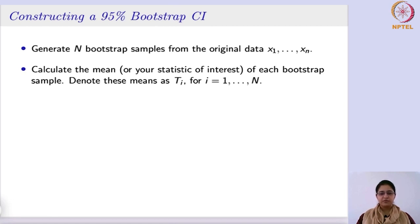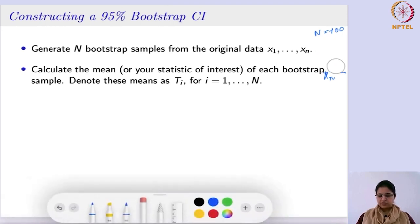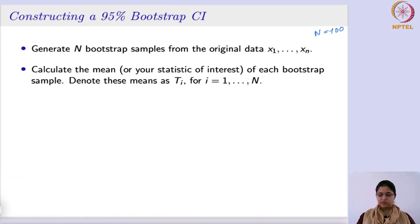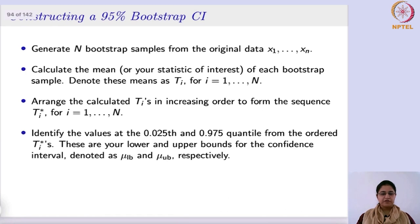Whatever means you have obtained — if n is 100, you obtain 100 means: x1_bar up to xn_bar. We denote these by t_i. So I calculate the mean of each sample: the first sample's mean is t1, the second sample's mean is t2, and so on up to t100. Now we arrange these t_i values — the means we have obtained — in increasing order. We do this because we need to find the quantiles or percentiles from them.